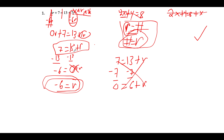Next we perform another inverse operation — subtract 13 from both sides of the equation — and we get that negative 6 is equal to r. The key here is that we subtract 6r from both sides to eliminate the variable from one side of the equation.